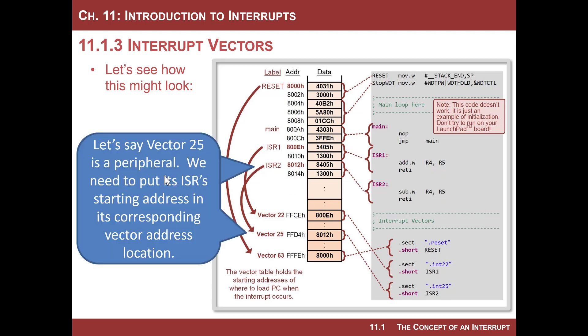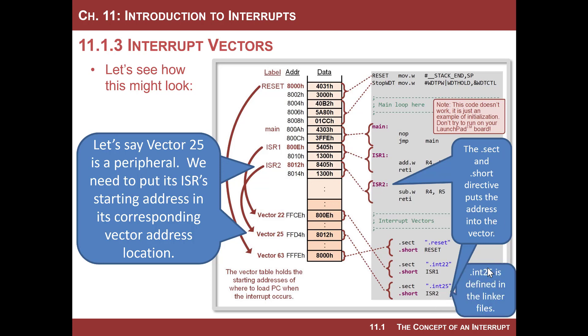Let's look at the final one. Let's say we had a vector 25, timer or peripheral or whatever, a port. And we want that to execute this interrupt service routine 2. So what we have is we write it and then that ISR2 label is going to have some address. In this situation, it's 8012. We need to put that into the vector table corresponding to vector 25. So again, we use .sect and .short to put the label into .int25, which again came from the linker file. Just think of the vector table as a hard-coded set of addresses, each assigned to a particular interrupt.